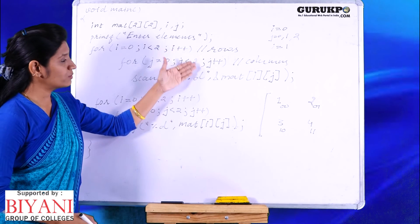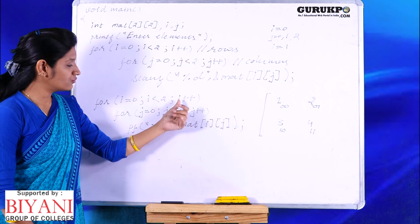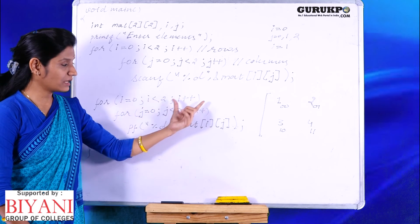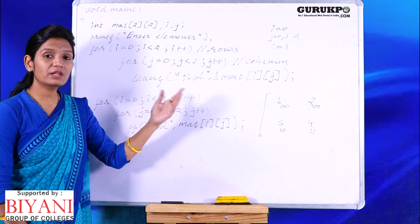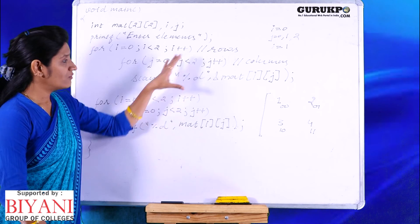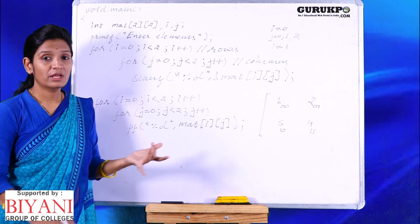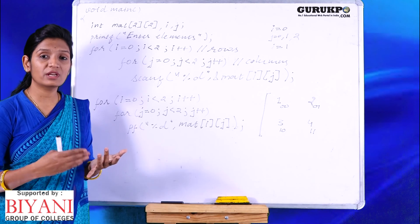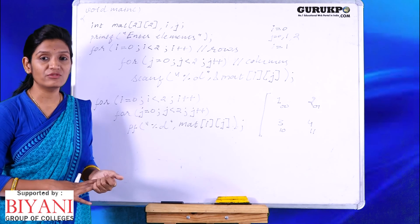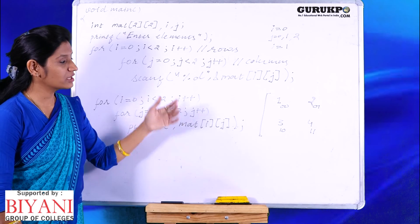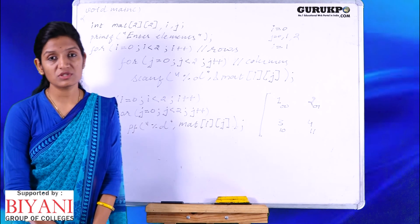The same loops can also be used for printing the value or using the values. Once we have taken the values from this loop, we can process on them, either we can process on them or we can print them, we can use them in any way. This is how we can take the values for a 2 dimensional matrix.